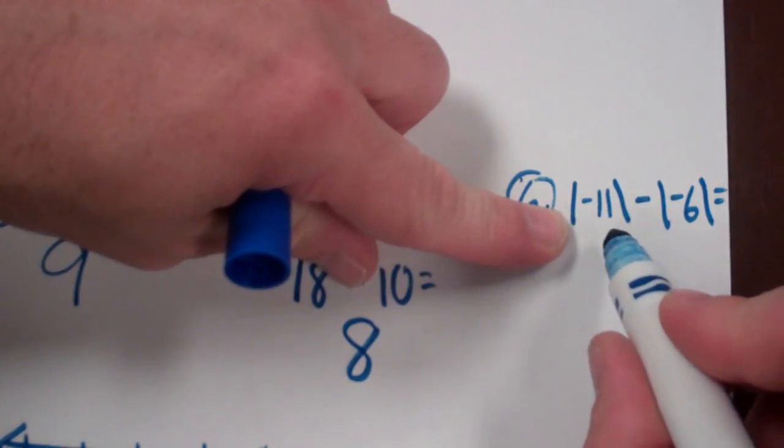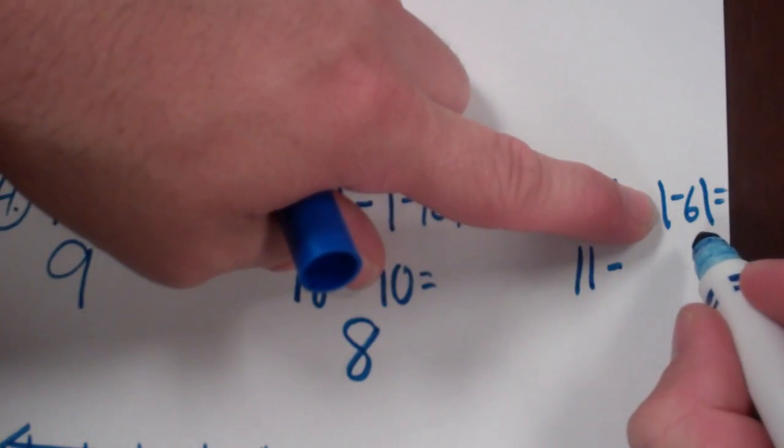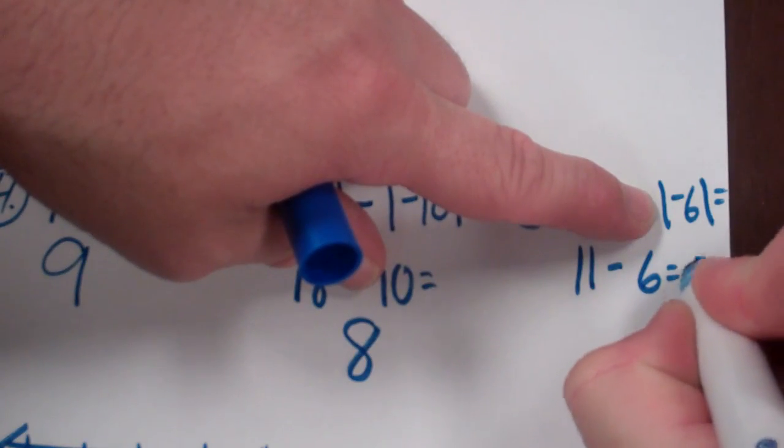The absolute value of negative 11. How far is negative 11 from zero? 11 minus the absolute value of negative 6? 6 equals 5.